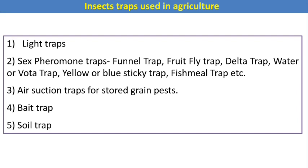Here is the list of insect traps mostly used in agriculture: light trap, sex pheromone trap, insect pheromone trap, funnel trap, fruit fly trap, delta trap, water trap, yellow or blue sticky trap, and fish mill trap. For stored grain pests we can use an air suction trap. In some places a bait trap is also used to attract insects, and a soil trap is also used.